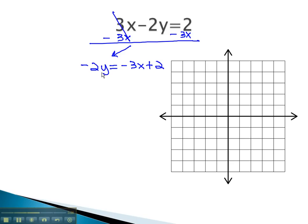To get the y alone, we divide both sides by negative 2. As we divide by negative 2, it is important to divide each and every term by 2. The negatives come to a positive, and we get 3 halves x minus 1.